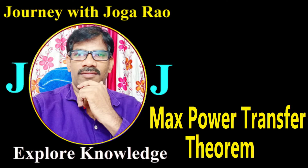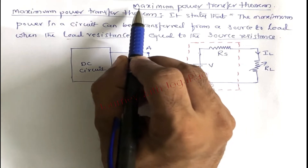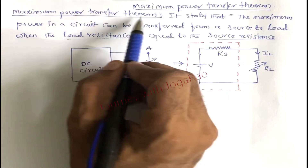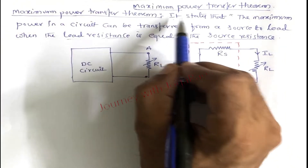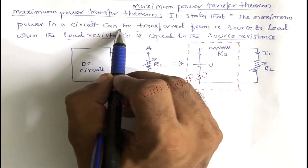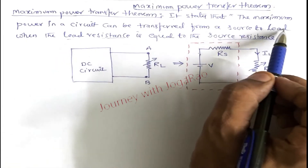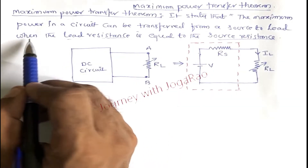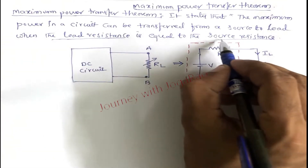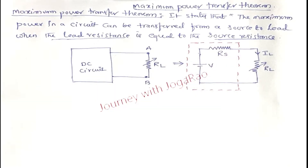Hi friends, welcome back to my channel. Dear students, in this video, I will explain the Maximum Power Transfer Theorem. This theorem is a statement: it states that the maximum power in a circuit can be transferred from a source to load when the load resistance is equal to the source resistance.